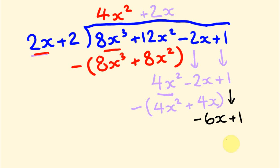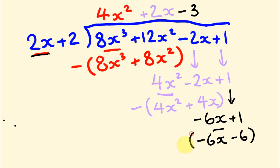Now we have minus 6x plus 1. How many times does 2x go into minus 6x? It goes in negative 3 times. Multiplying: minus 3 times 2x is minus 6x, and minus 3 times 2 is minus 6. Subtracting: minus 6x minus minus 6x cancels to zero, and positive 1 minus minus 6 is positive 1 plus 6, which equals 7. This 7 is our remainder, since we can't divide 2x plus 2 into 7.